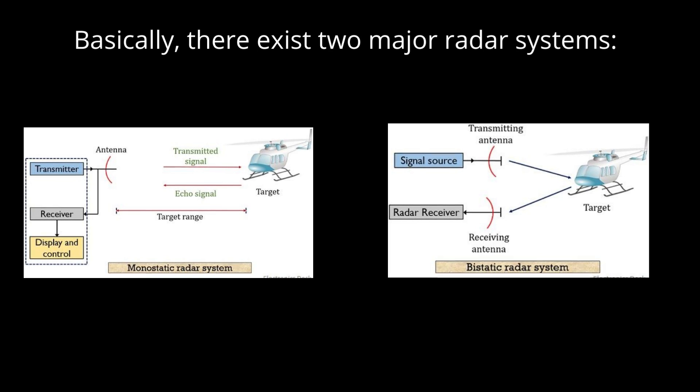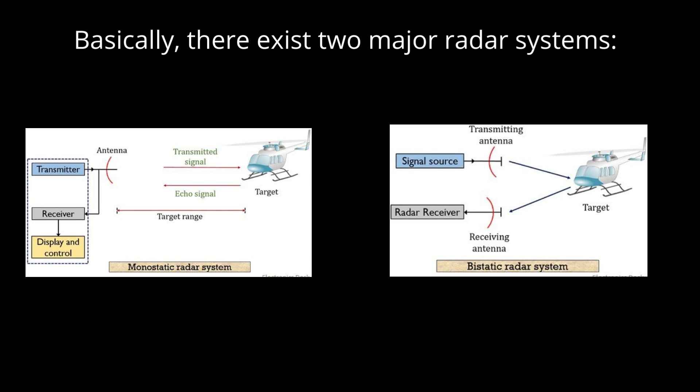Basically, there exist two major radar systems. First one is monostatic radar system, and second one is bistatic radar system. In monostatic radar systems, the receiver and transmitter use the same antenna. Whereas in bistatic radar systems, the receiver has a separate antenna and the transmitter has a separate antenna.